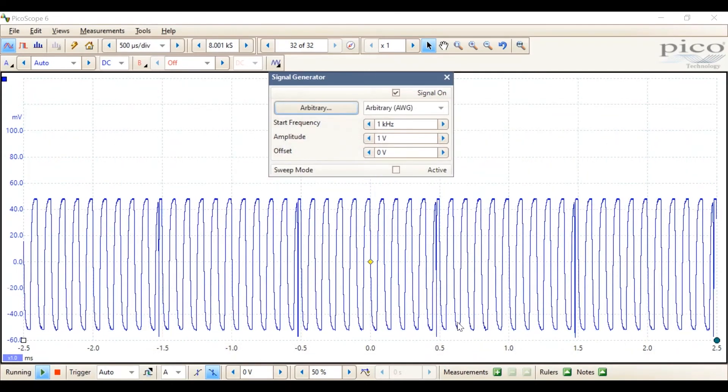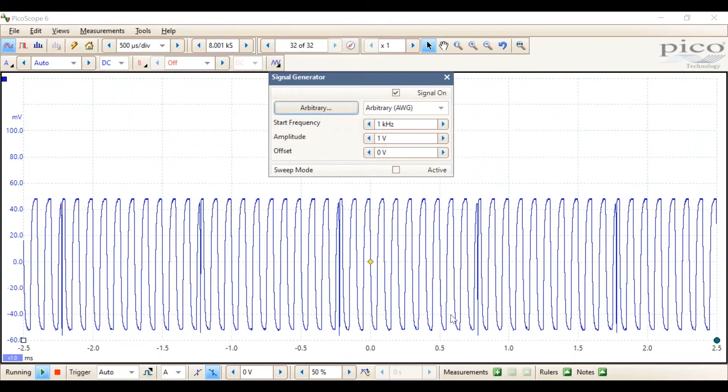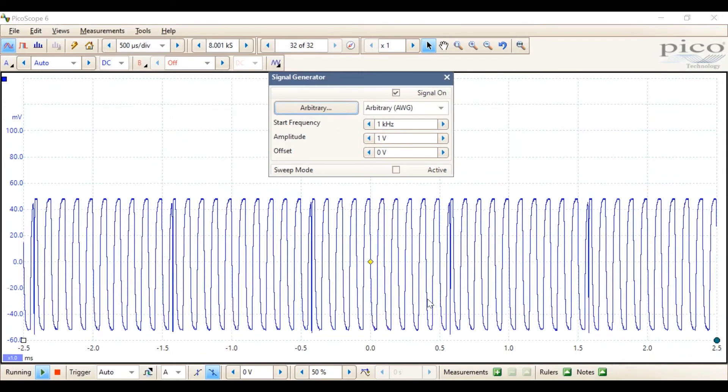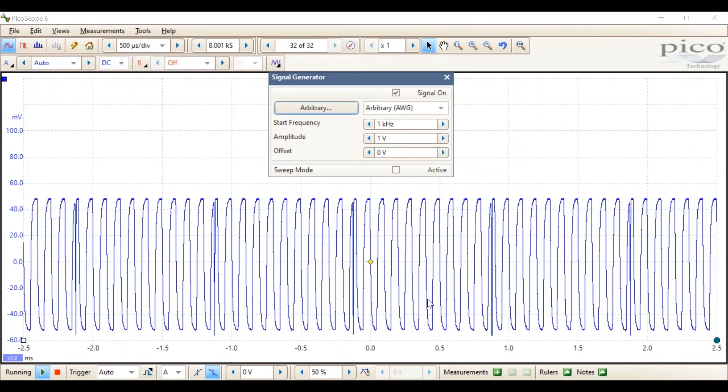And we can see that there is something occurring. But it's difficult to see as it's not being isolated by the trigger. And so, to isolate it, I'm going to set up a pulse width trigger.